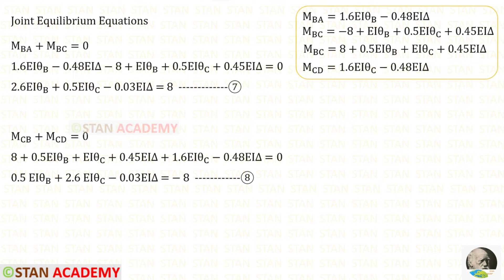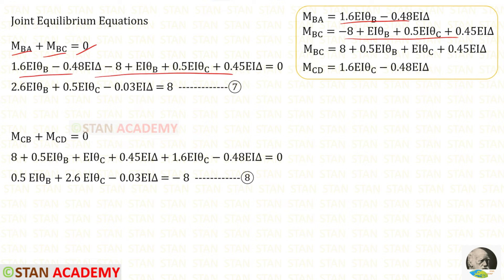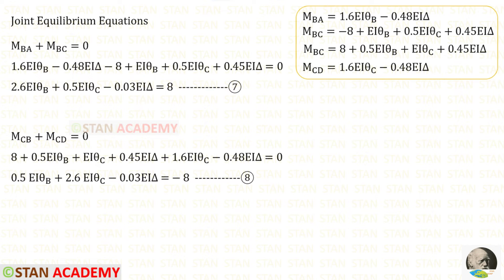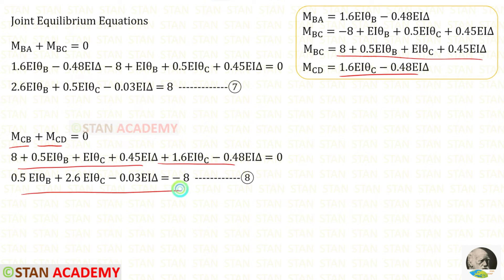Now let us make the joint equilibrium equations. At joint B, M_BA + M_BC = 0. Applying the expressions from the slope deflection equations for M_BA and M_BC and adding them, we get equation number 7. At joint C, M_CB + M_CD = 0. Applying the expressions for M_CB and M_CD and adding them, we get equation number 8.